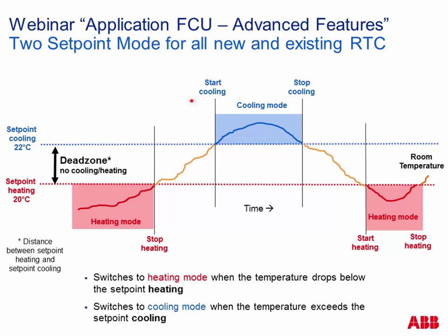One set point and two set point mode. Two set point mode — if you have both heating and cooling — is something we know from the beginning. You adjust two different set points inside the room temperature controller: one for heating, for example 20 degrees, and 22 for cooling. In between there is a dead zone — neither heating nor cooling. Only below 20 degrees is heating active; only above 22 degrees is cooling active. When temperature drops below 22, no cooling; only below 20 does heating start again. The user sees two different set points depending on mode, which can sometimes confuse them.